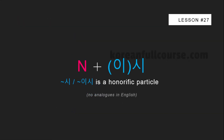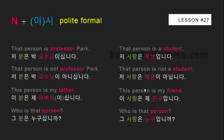The honorific particles can be used not only with verbs and adjectives but also with nouns. Pause the video and try to find and analyze the difference between examples on the right-hand side and on the left-hand side. Here we are talking about professors and father, so I used the honorific particle 시 and 으시. In the sentences on the right-hand side, I am talking about students and friends, so I don't need to use honorific particles.